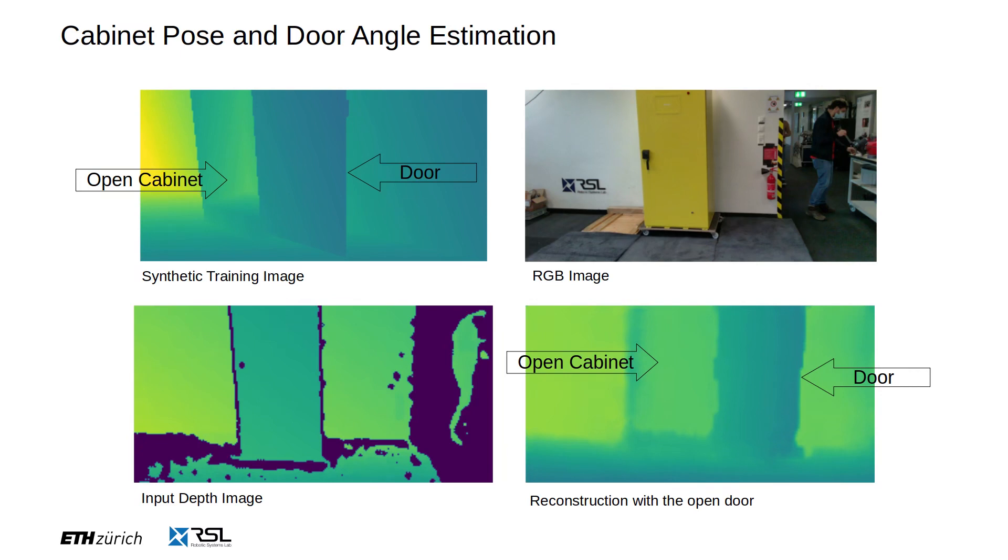One application scenario for deep measurement updates is the joint estimation of pose and articulation state of an object. We have trained the network with depth images of switchboard cabinets. The pose and the opening angle form the condition vector.